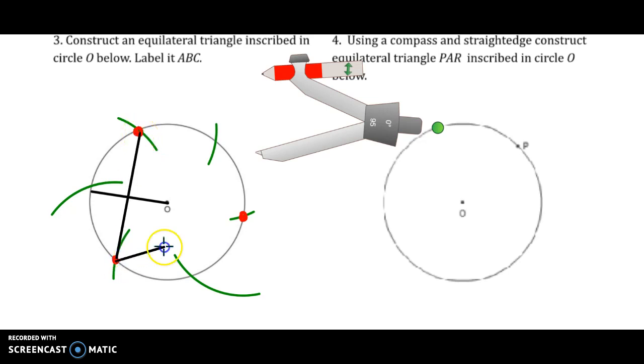And there is my equilateral triangle inscribed in a circle. Be careful to read the question. It said to label it ABC. If I didn't label it ABC and this was a two-point question, I would now be down to one point. ABC, it doesn't matter where you start A from, as long as you go in order. It doesn't matter if you go counterclockwise with labeling or clockwise.